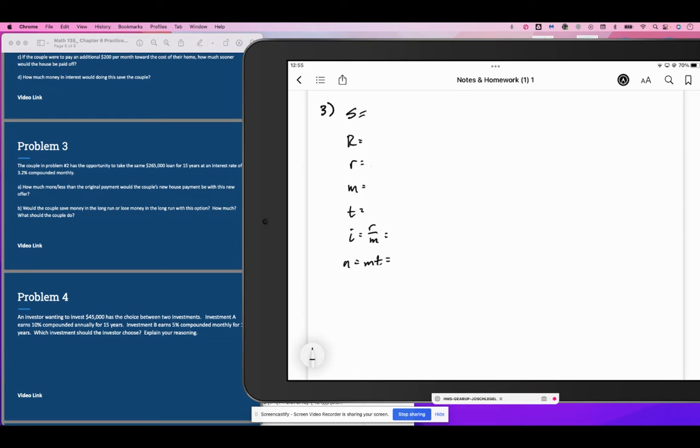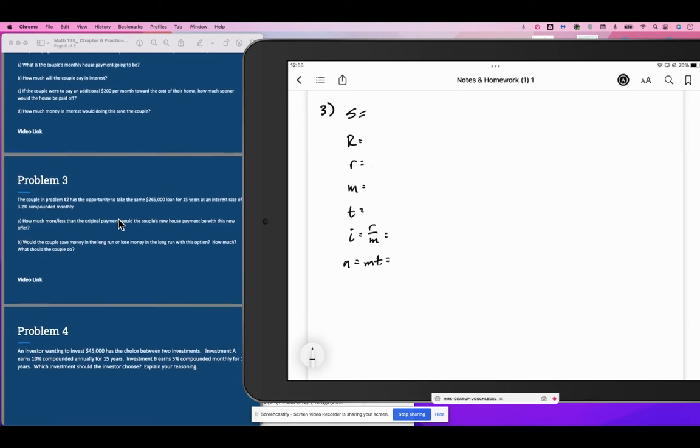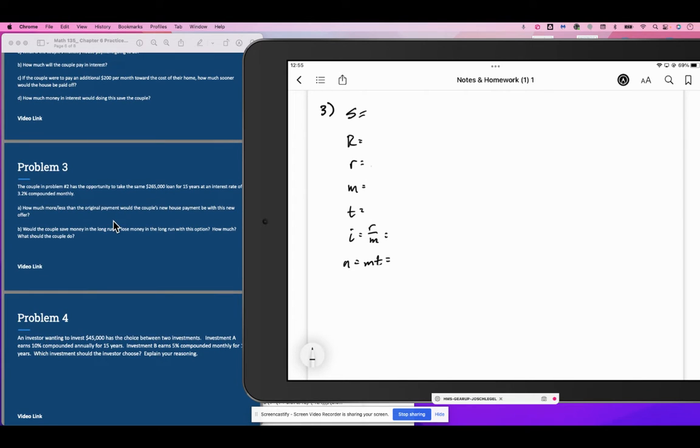Problem three brings us to the same couple in number two, who has the opportunity to buy the same house with a loan for 15 years at a rate of 3.2% compounded monthly. There's a giant difference in the interest rate from 7.6% down to 3.2%. How much more or less than the original payment would the couple's new house payment be? Would the couple save money in the long run, and if so, how much?